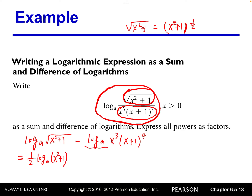So one-half can go as a coefficient or factor. And then now look at the second term. The second term is a product — x cubed times x plus one to the fourth — so we can write this as two terms: log base a of x cubed plus log base a of x plus one to the fourth.